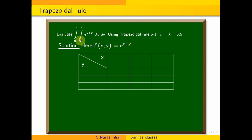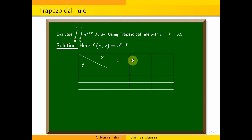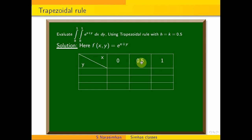The x-order lower limit is 0. Increasing by 0.5 gives 0.5, and 0.5 plus 0.5 is 1. So the x values are: 0, 0.5, 1.